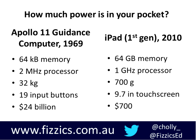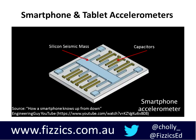By comparison, the first-generation iPad has 64 gigabytes of memory – a million times more capacity. It has a 1 gigahertz processor, about 1,000 times more powerful than what guided Apollo, weighs less than a kilo, and you can pick one up on eBay for around $300 or less. The take-home message is that we really should be using this power more, and a lot of tool apps let us do that.